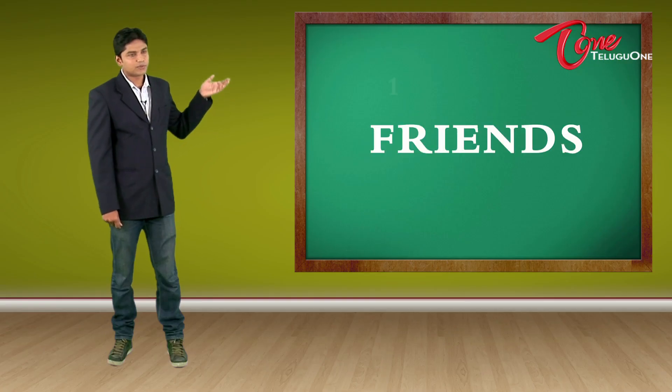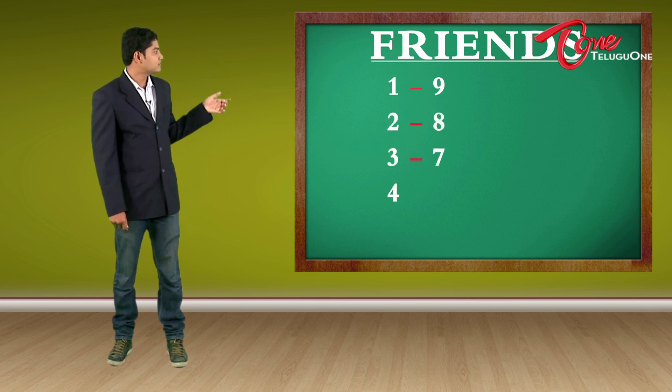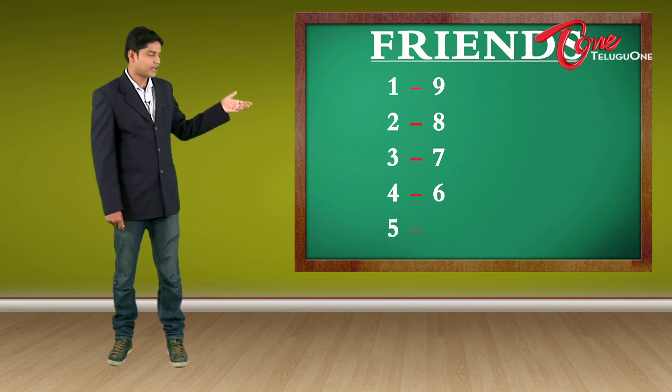So let me start with something called friends. 1's friend is 9, 2's friend is 8, 3's friend is 7, 4's friend is 6 and 5's friend is 5. Now, can you all find out the reason they are friends?